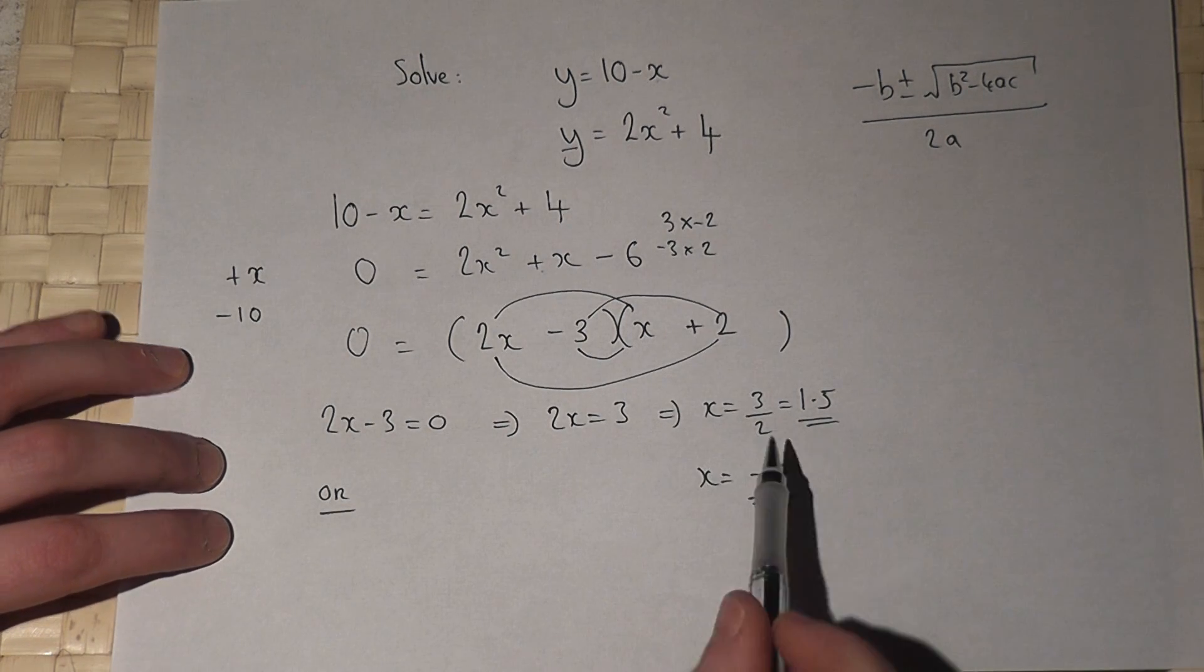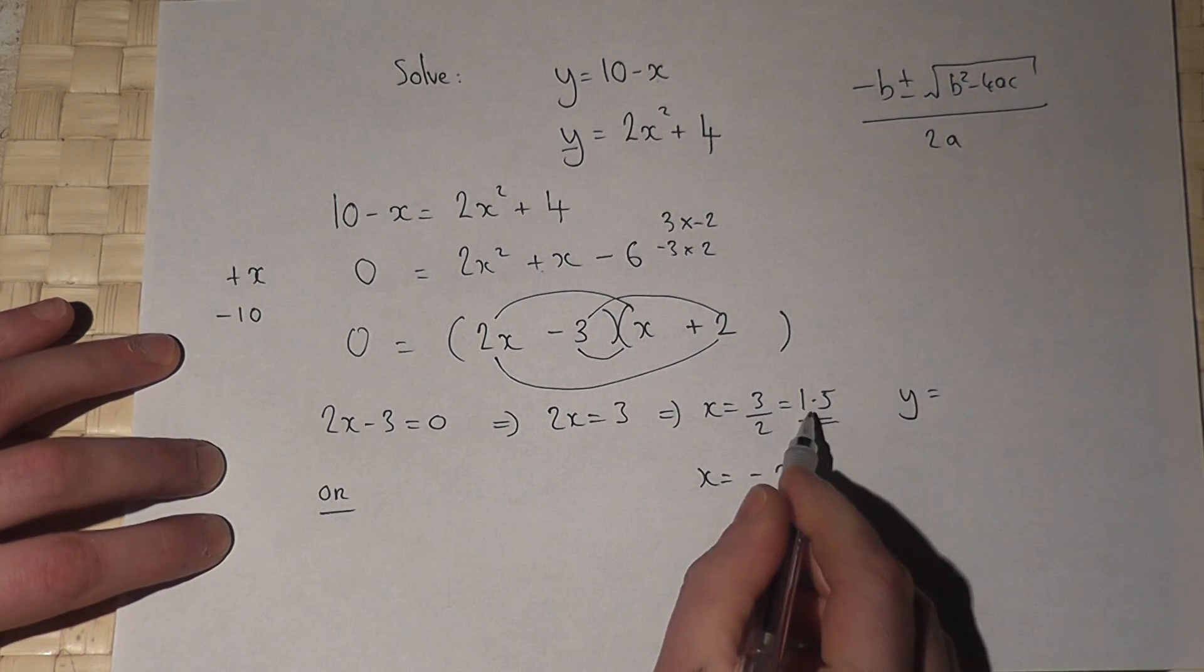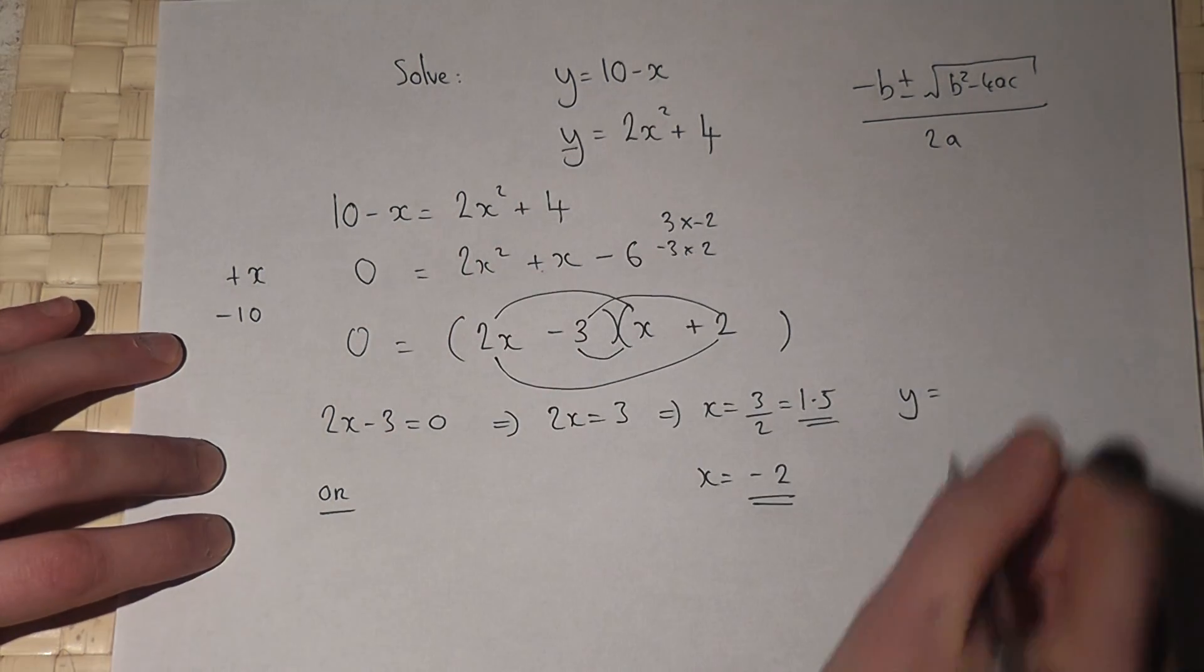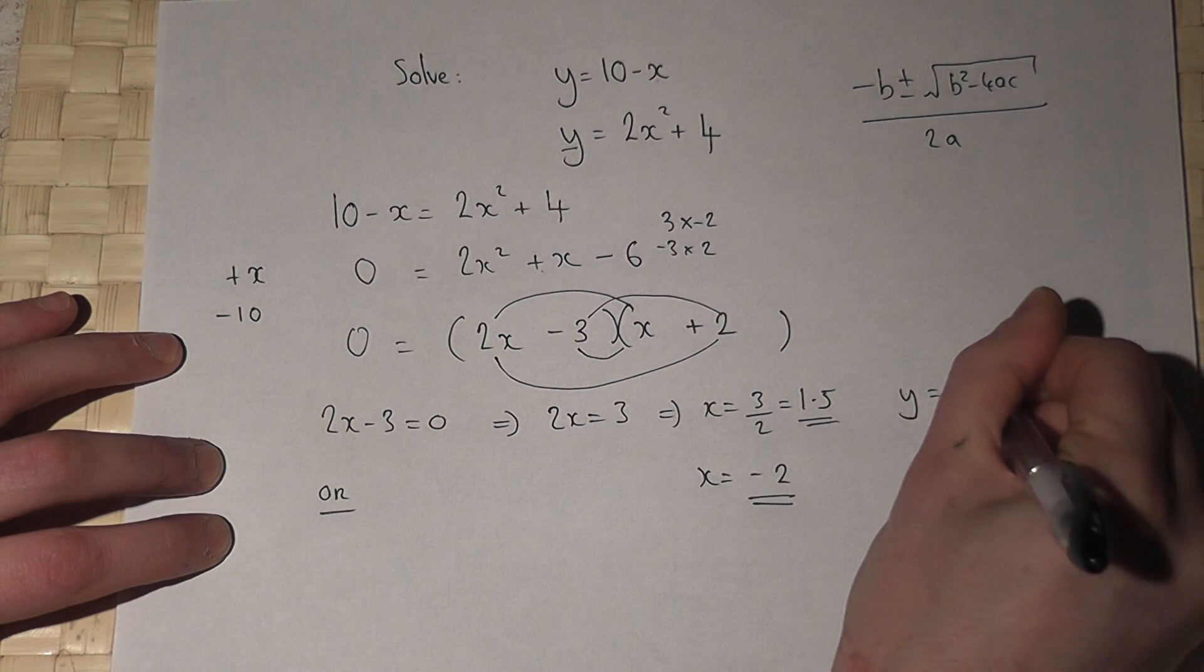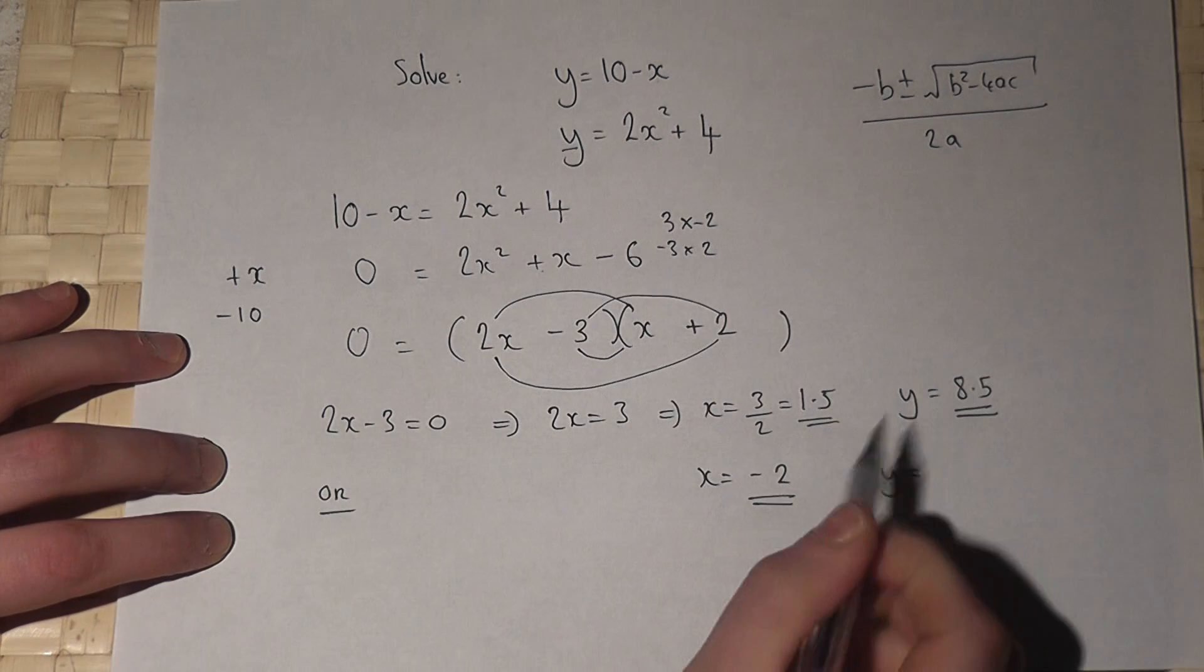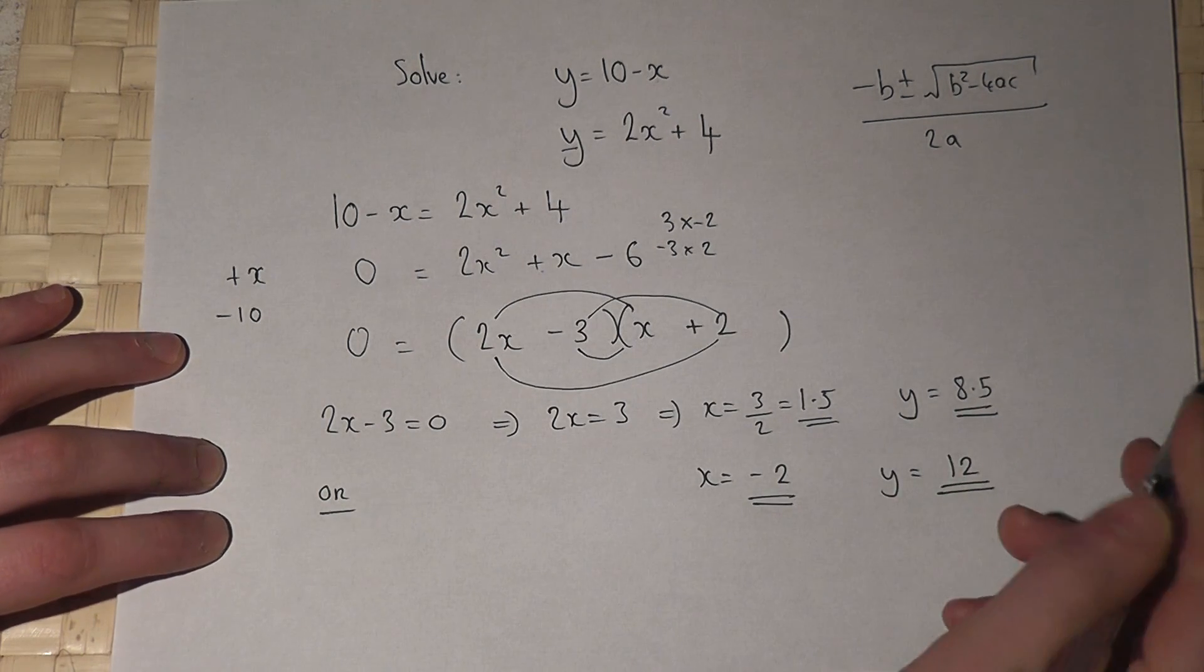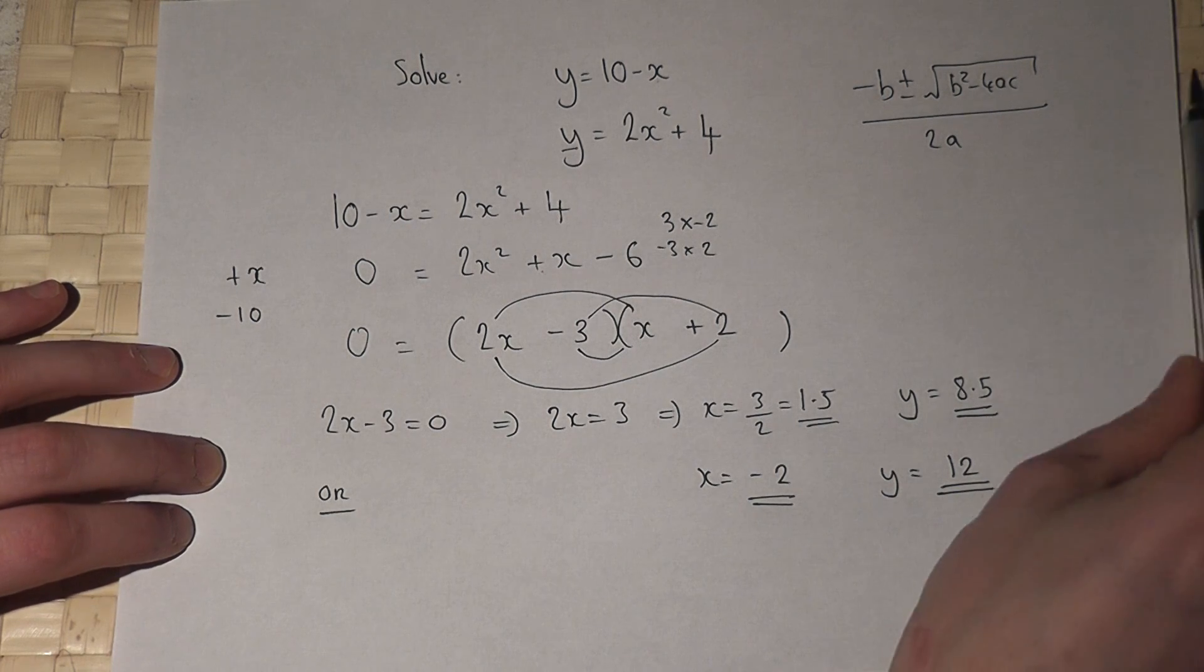I found x, so I must find the corresponding y values. When x is 1.5, y is 10 take 1.5, which is 8.5. When x is minus 2, y is 10 take minus 2, which is 12. And they are the two solutions to the pair of simultaneous equations.